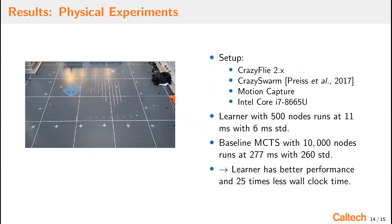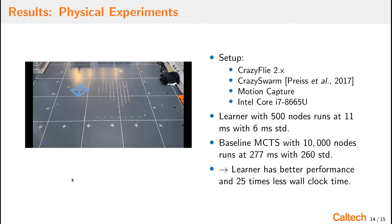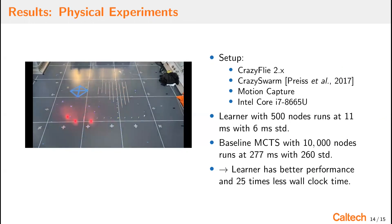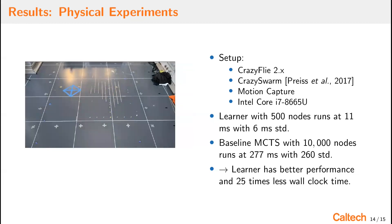Finally, we present results in the form of physical experiments. Here we're flying three v2 reach target avoid game on Crazy Fly quadrotors in a motion capture arena using the Crazy Swarm software infrastructure. We're running the policies in parallel on an Intel i7 processor, and we demonstrate that the learner with 500 nodes runs at 11 milliseconds, and a baseline Monte Carlo tree search with 10,000 nodes runs at 277 milliseconds. We demonstrate that the learner has better performance and 25 times less wall clock time, which demonstrates that the NTE algorithm can be used to enable real-time planning in complex scenarios.